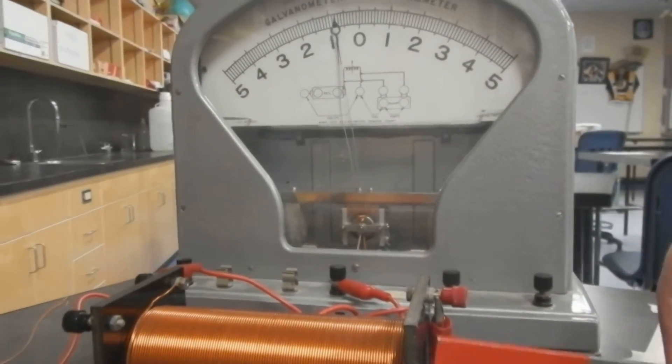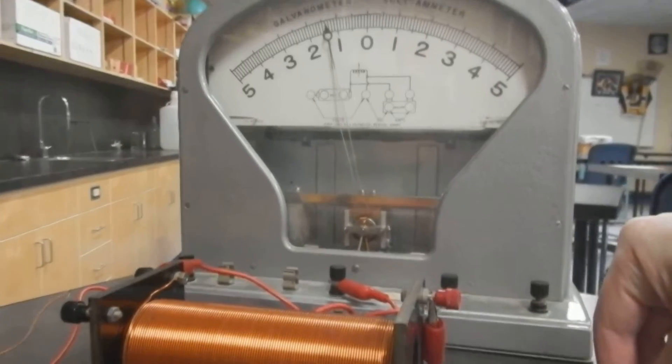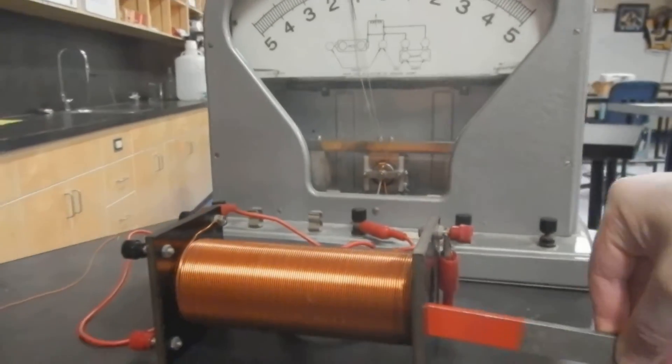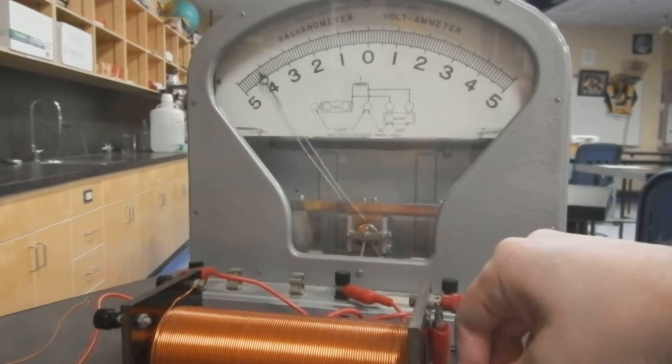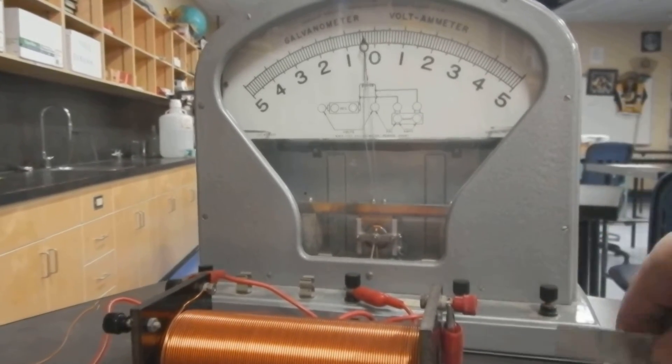So I'm going to put the red end into the solenoid. And you can see the needle goes left. Pull the red end out, it goes right. Boom, boom. Alternating current.